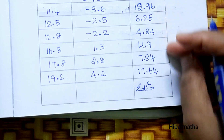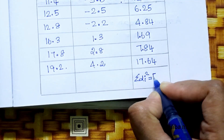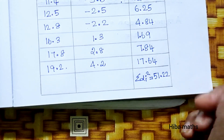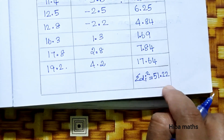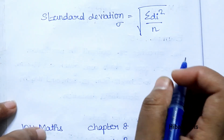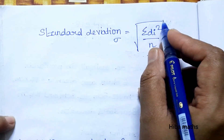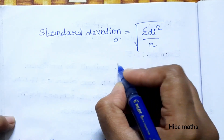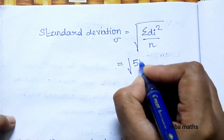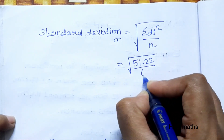If you add the di squared values, the sum is 51.22. Now we apply the standard deviation formula: standard deviation equals the square root of the summation of di squared divided by n. That is the square root of 51.22 divided by 6.